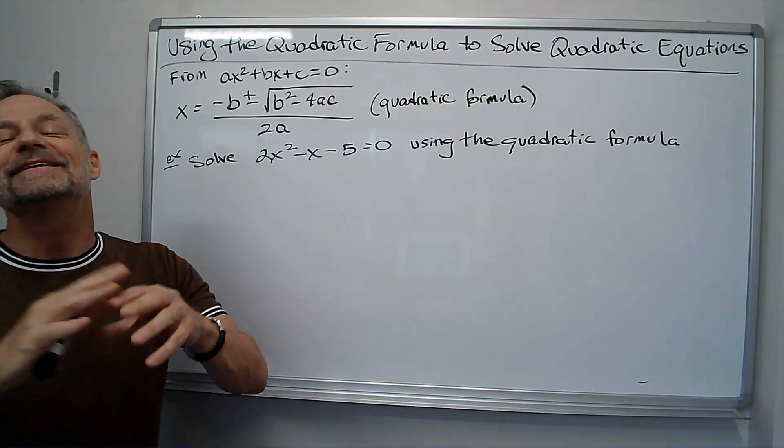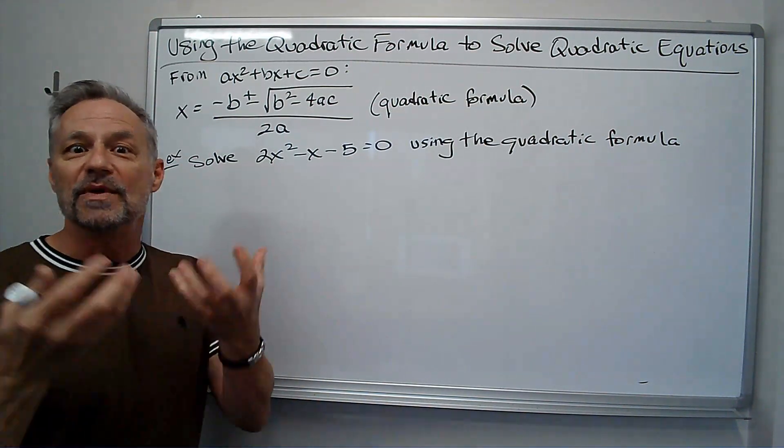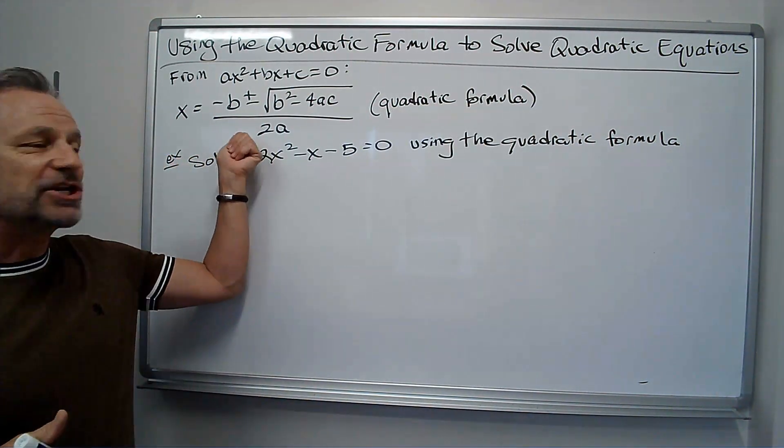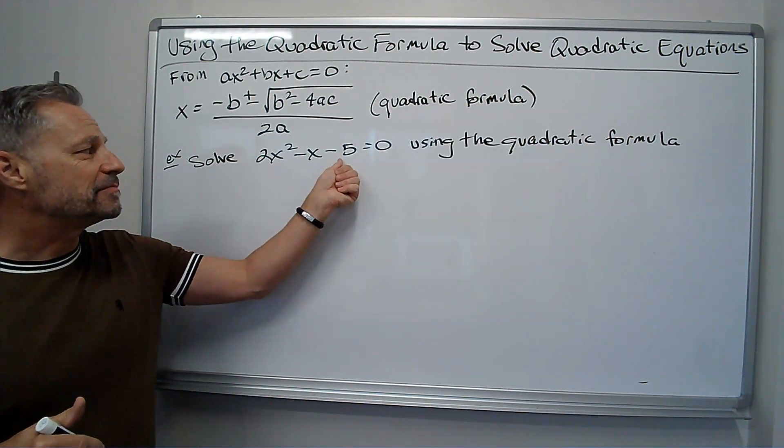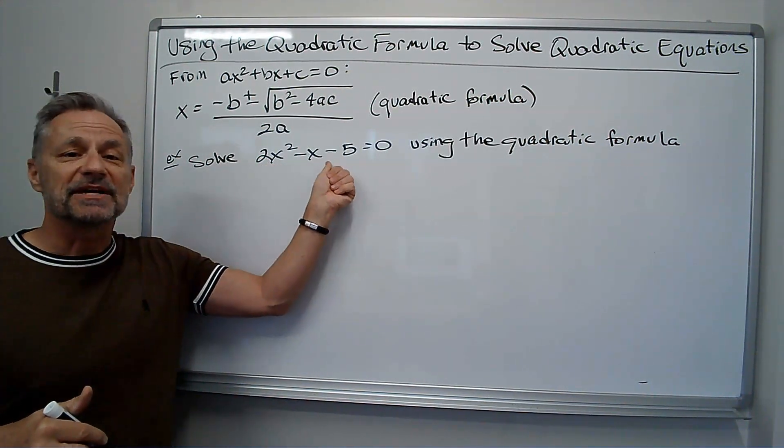So if that helps use that, if it doesn't find something that helps, maybe you just remember formulas. But we're going to use that to solve this equation: 2x squared minus x minus 5 equals zero.